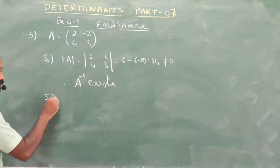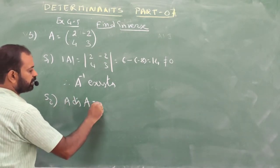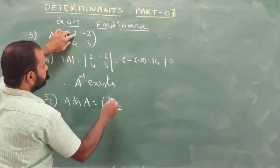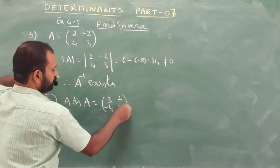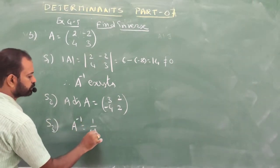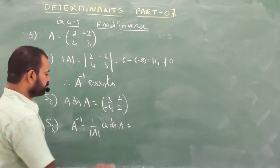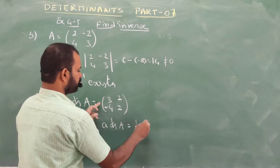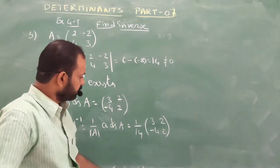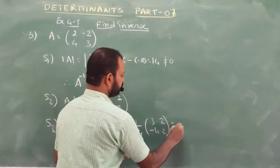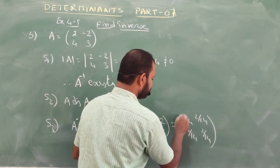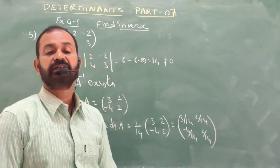Second step: find adjoint A. Since it is 2×2, exchange diagonal elements and change signs of other elements. Third step: A inverse = (1/|A|) × adjoint A = (1/14) × adjoint A = (1/14) × [3, 2; -4, 2]. You can keep it in this form or multiply each element by 1/14.